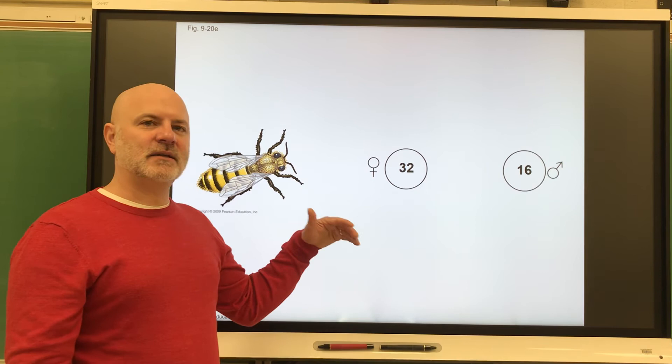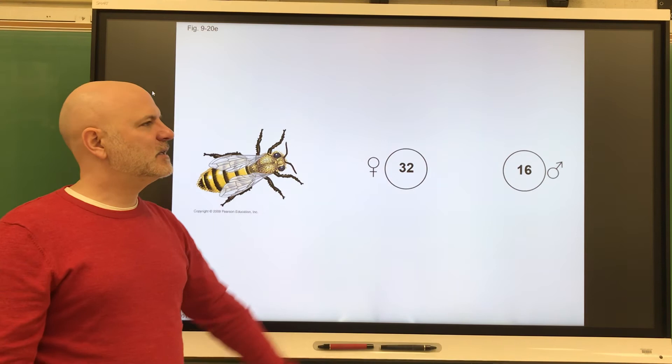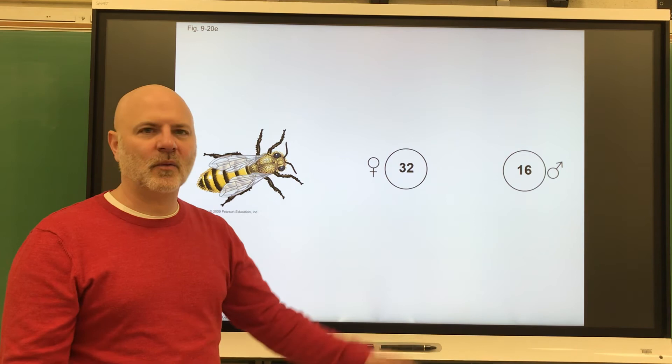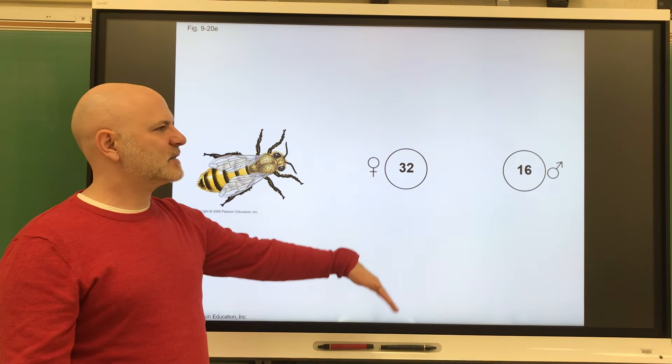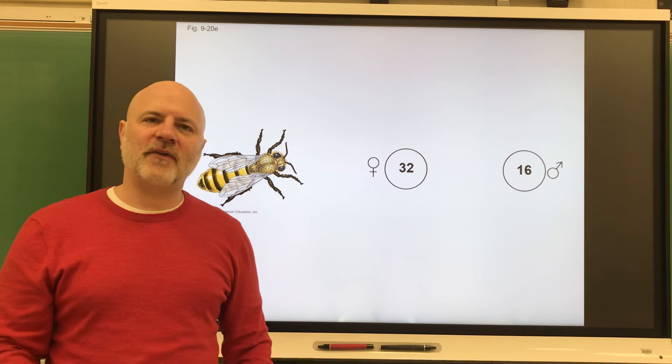The female in this case, the queen ant or queen bee, will produce diploid offspring. Most of the ants, bees, and wasps that you encounter are female, like 99.99999999%. A very small percentage are actually males. She'll produce all these females, and then at certain times of the year, she will produce an unfertilized egg, which will be a male that will have nothing but her genes in them. Those males will go out and find a female to reproduce with.